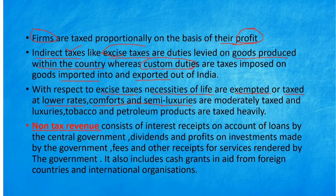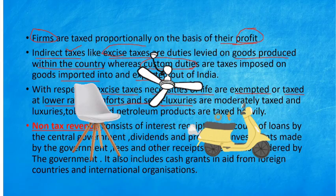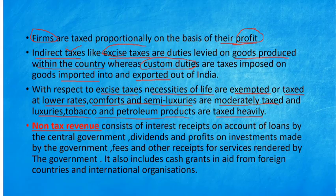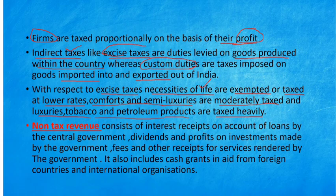The second category is comforts and semi-luxuries — items we use for comfort like fans, two-wheelers, or low-budget vehicles. These are moderately taxed — not a very high rate, not a very low rate, something in between. And luxuries, tobacco, and petroleum products are taxed heavily, meaning there is a high rate of tax on luxuries. So, tax revenue is now complete.